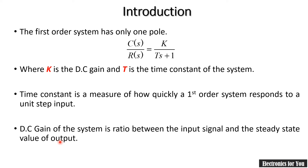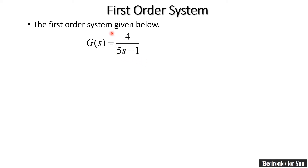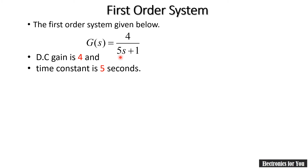Consider an example: a first-order system with equation in the form K/(Ts+1), where 4 is the DC gain and 5 is the time constant in seconds.